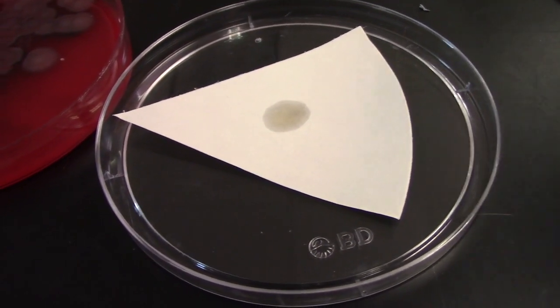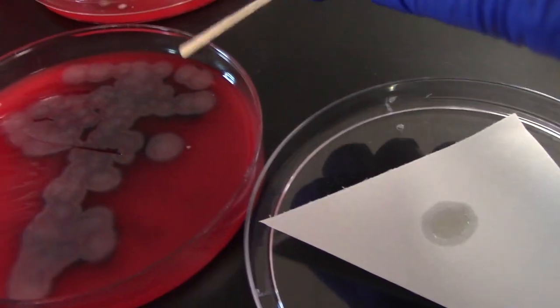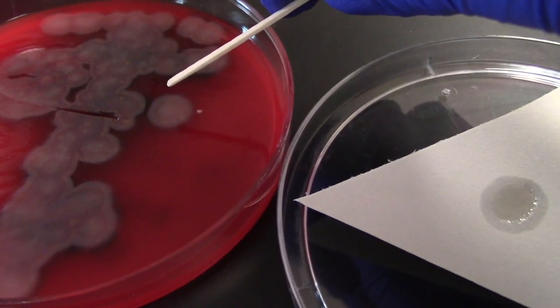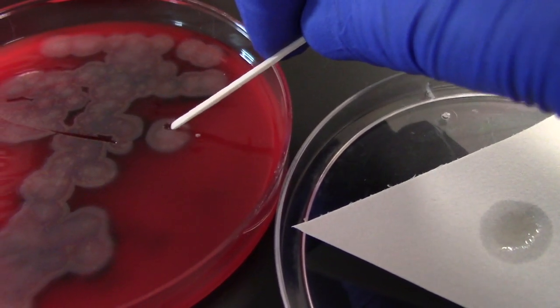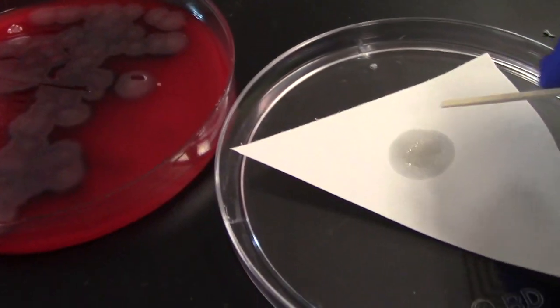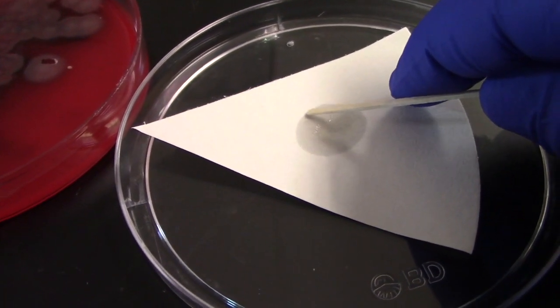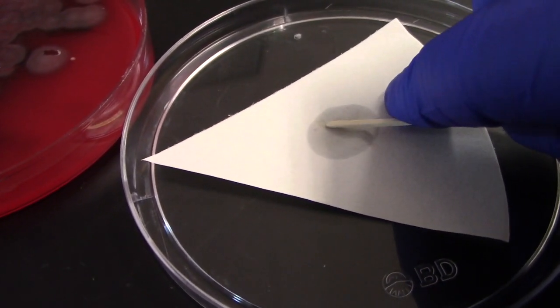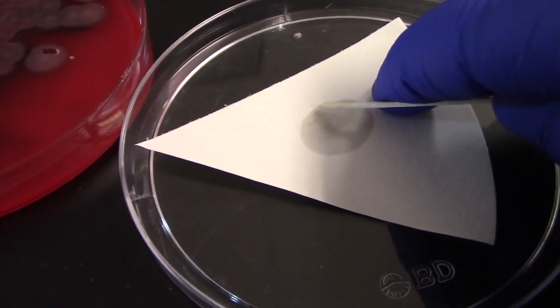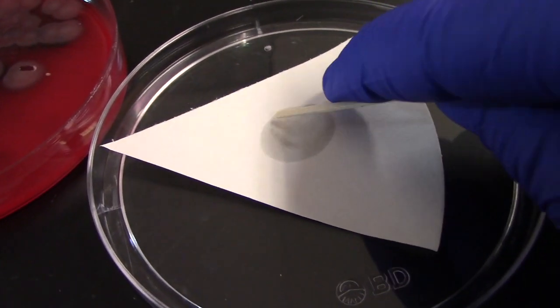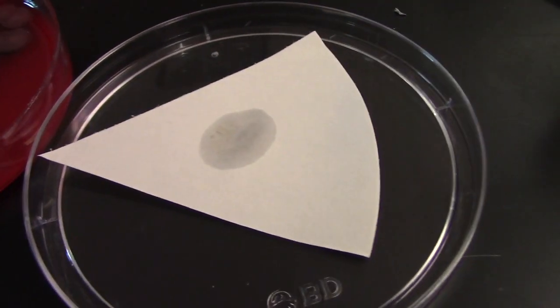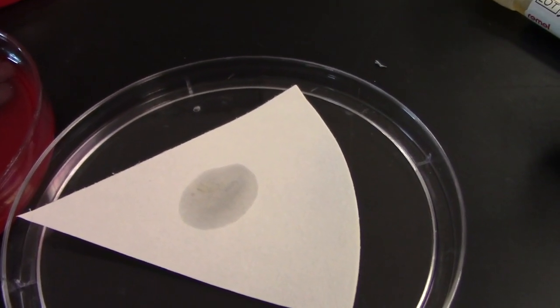We squeeze out a drop of the reagent onto a filter paper that's been placed inside the lid of our petri dish. Obtain a small amount of colony with a non-sterile stick and smear it onto the area where we've dropped the reagent.